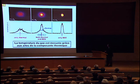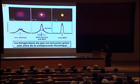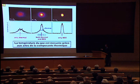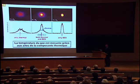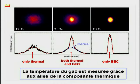Dans ce transparent, on voit très clairement, dans l'image centrale, la formation d'une structure bimodale, typique dans le profil de densité, qui traduit la coexistence du condensat, ici reproduit en rouge, et de la partie thermique, ici indiquée en bleu. La température du gaz est mesurée grâce au comportement du profil de densité dans les ailes de la composante thermique.